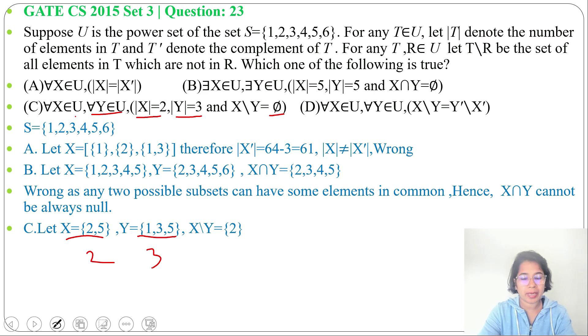Now, X\Y. So, that is the elements which are in X and not in Y. So, X\Y will be {2}. Here, its cardinality equals 1. But in option it's written it should be 5. In our example, we found it's 1. So, it is false. It's not always 5.